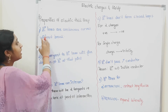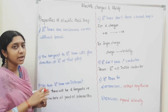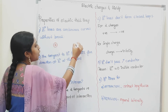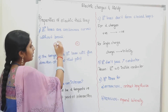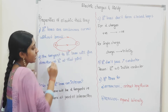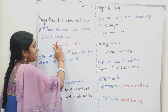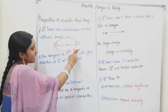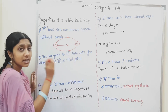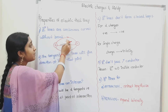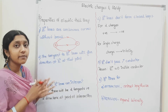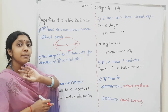The first property is that electric field lines are continuous curves without breaks. For example, looking at a dipole — a positive and negative charge — the electric field lines form smooth continuous curves. This is a smooth continuous curve where there is no break. This is the first point: electric field lines are continuous curves without breaks.